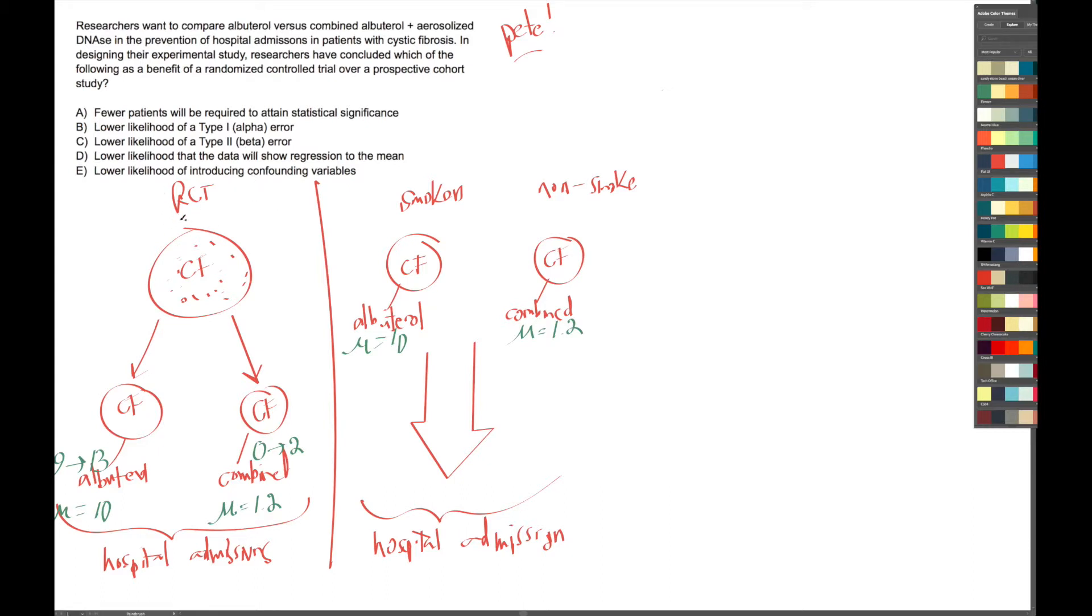Just because we like to think of the RCT as the better study, the gold standard, doesn't mean that the stats that we run on this study is going to be any different than this one. It's the same formula. We have to use the same formulas to compute the standard deviation and to compare these two means as we would these two means. So just because the RCT is the gold standard doesn't mean we can use fewer patients.